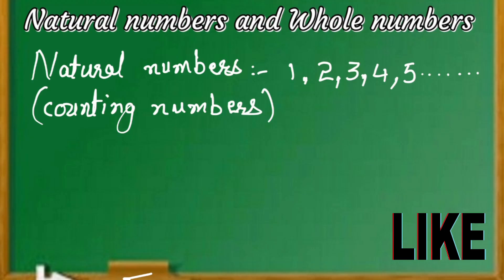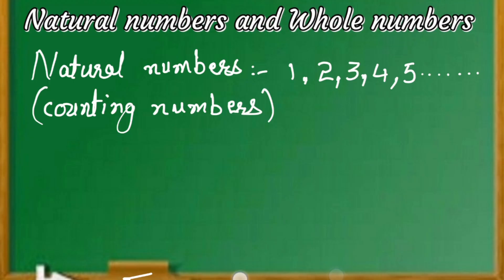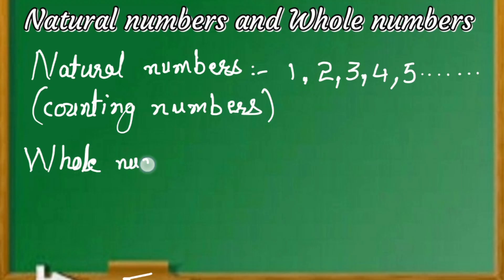Whole numbers are nothing but natural numbers with zero. So all natural numbers come under whole numbers, with zero included. Whole numbers start from zero: zero, one, two, three, four, five — these are called whole numbers.